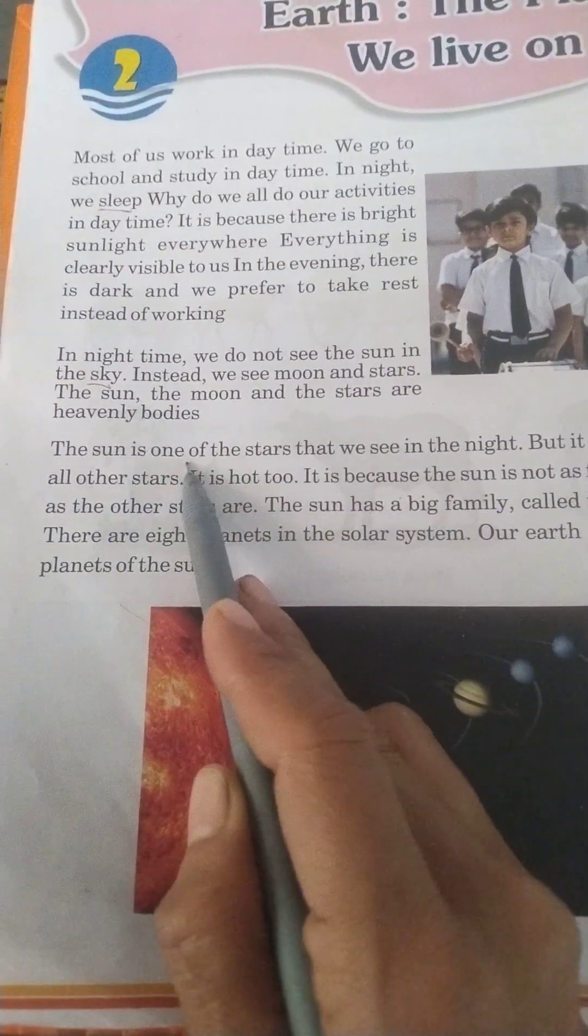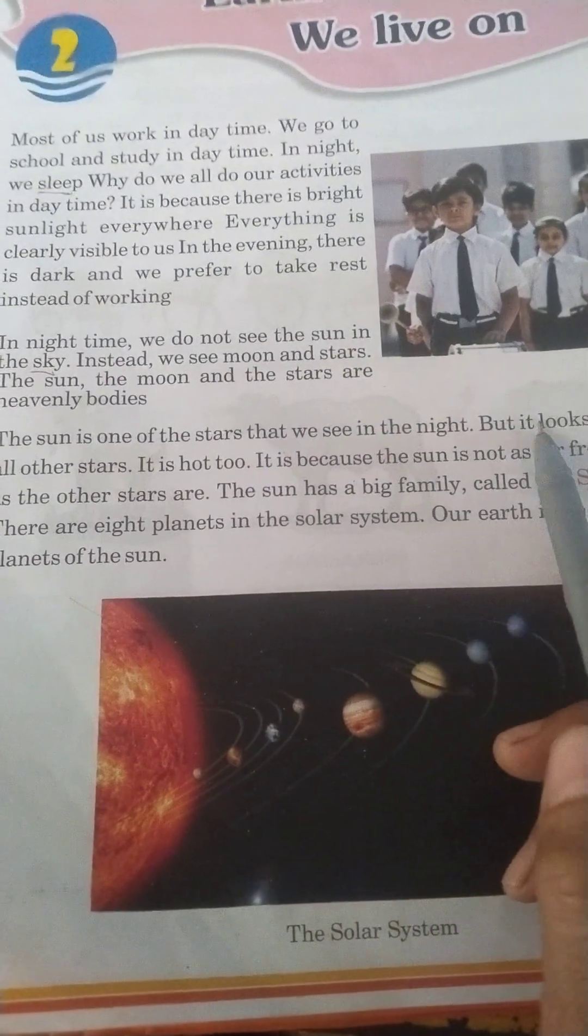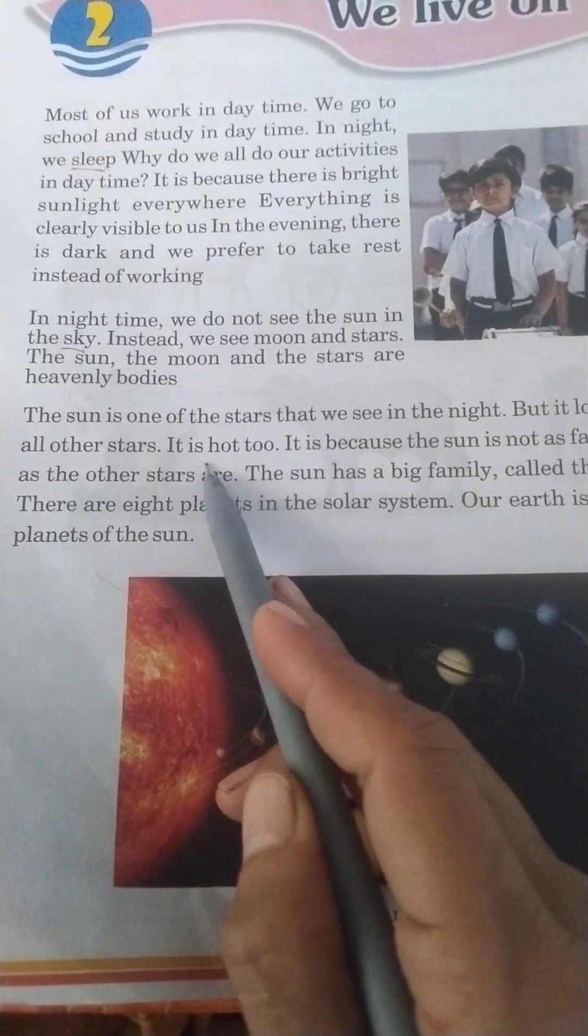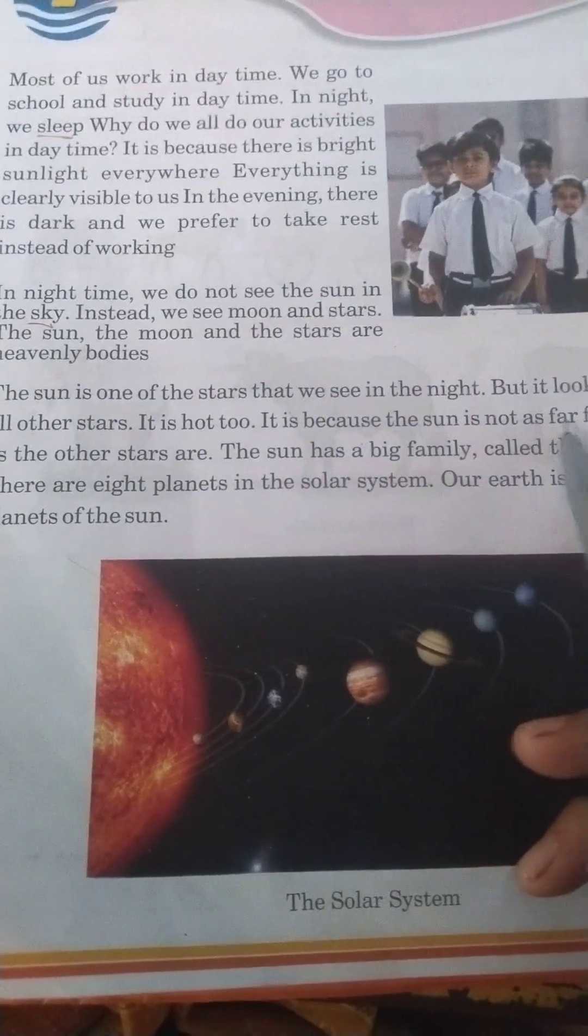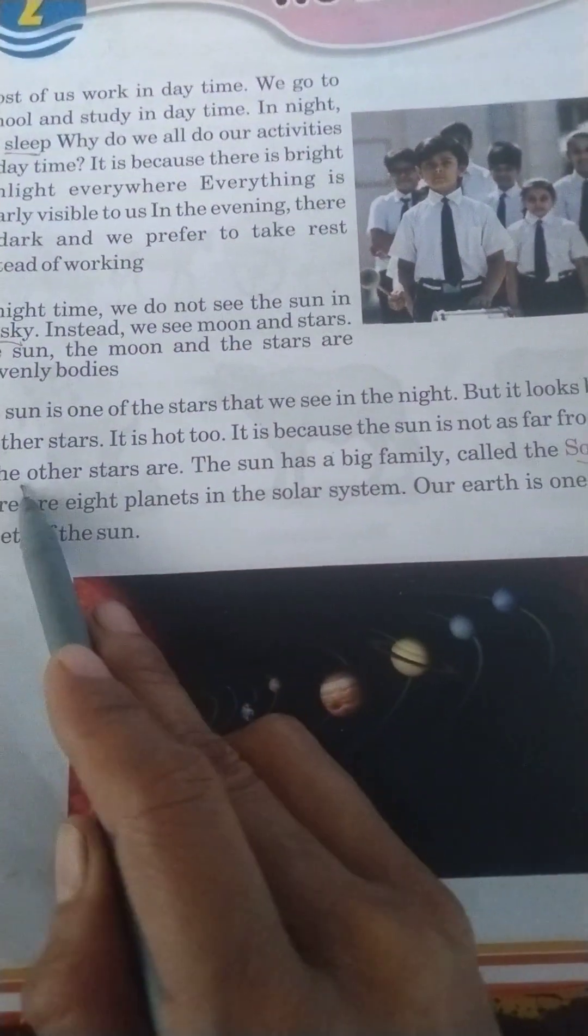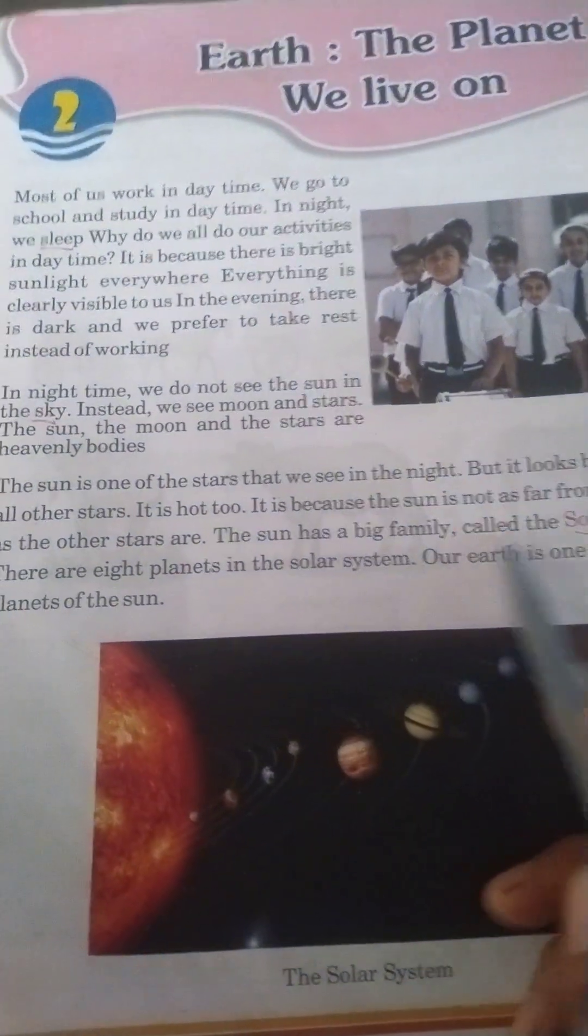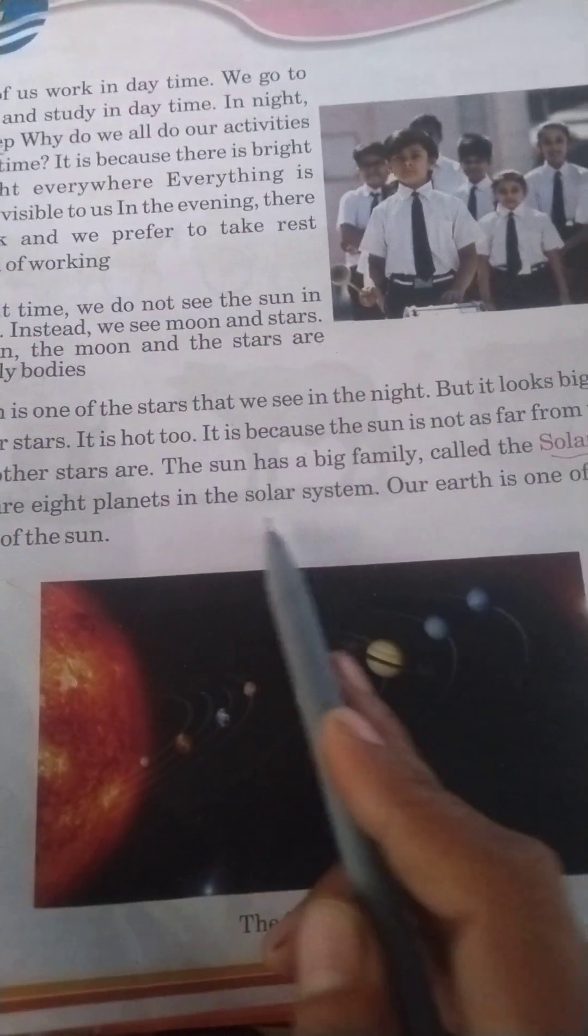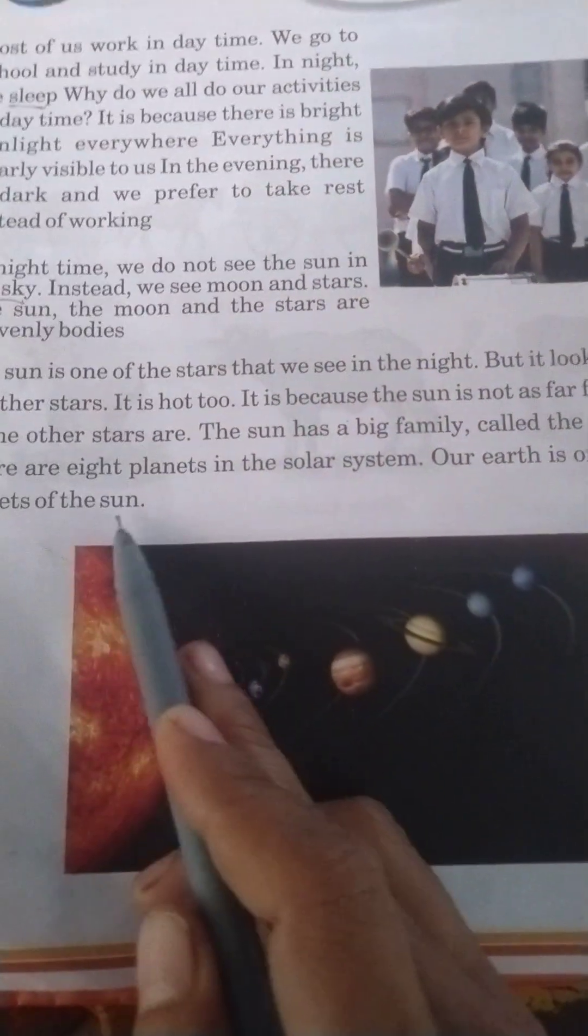The sun is one of the stars that we see in the night. But it looks bigger than all other stars. It is because the sun is not as far from the earth as the other stars are. The sun has a big family called the solar system. There are 8 planets in the solar system. Our earth is one of the 8 planets of the sun.